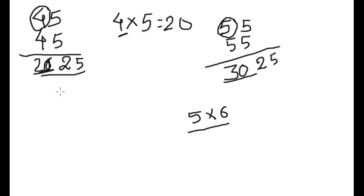Let's take another example, 85 times 85. First, the last two digits are fixed at 25. The first digit is 8, multiplied by the next higher digit which is 9. This is 72. So the answer is 7225.